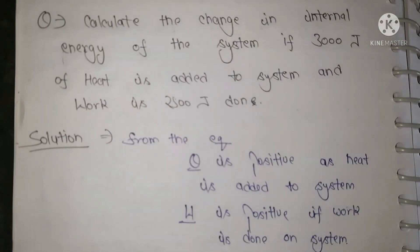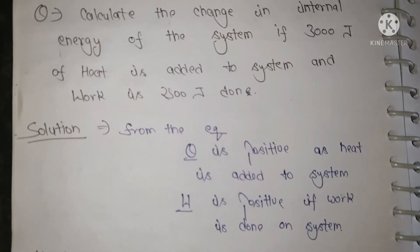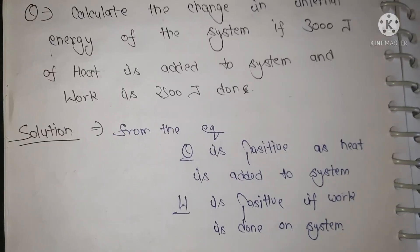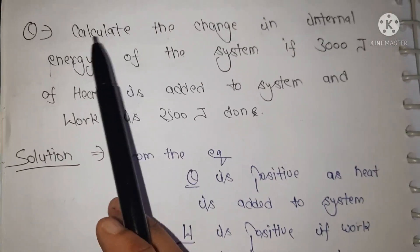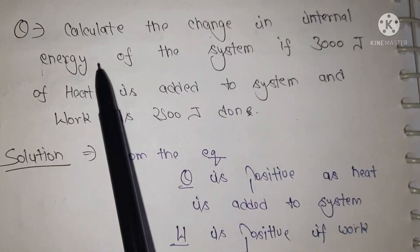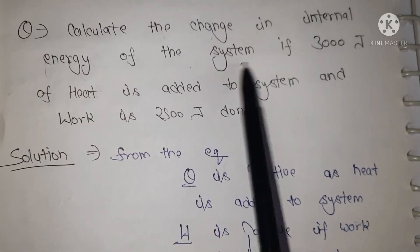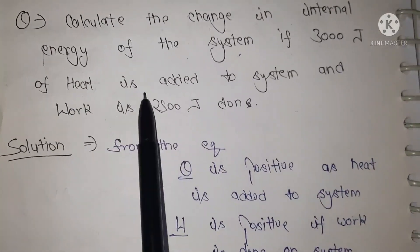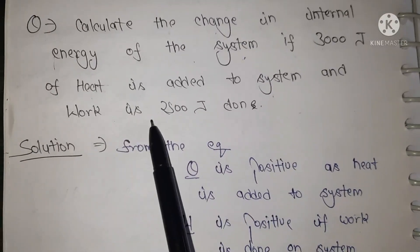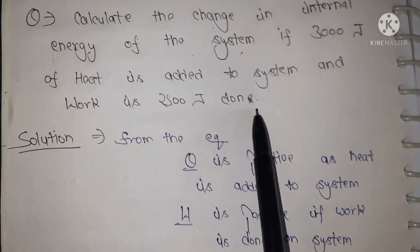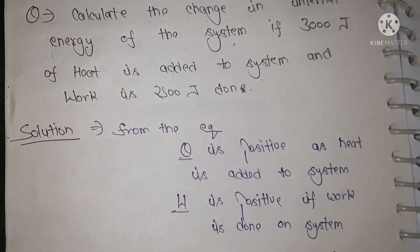Now I will discuss numerical type question from the law of thermodynamics, the first law of thermodynamics. So firstly we will read the question. Calculate the change in the internal energy of the system if 3000 joule of heat is added to system and work is 2500 joule done.